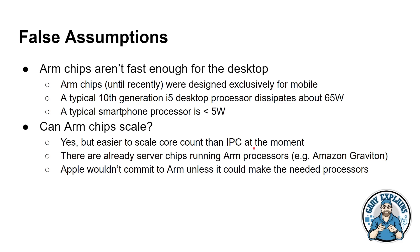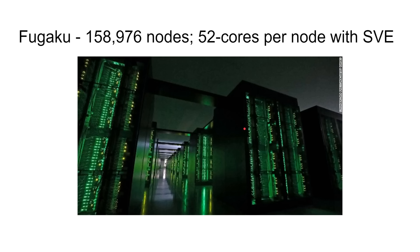ARM doesn't necessarily make high-IPC desktop-class chips at the moment. However, there are already ARM chips for servers like the Amazon Graviton, and ARM has its Neoverse range. And of course Apple wouldn't commit to using its own ARM silicon unless it knew it could scale the processors up. It's also worth mentioning that the Japanese Fujitsu-based supercomputer has now taken the number one spot in the Top500 list of supercomputers — and it's based on the ARM architecture. So can it scale up? Absolutely it can.